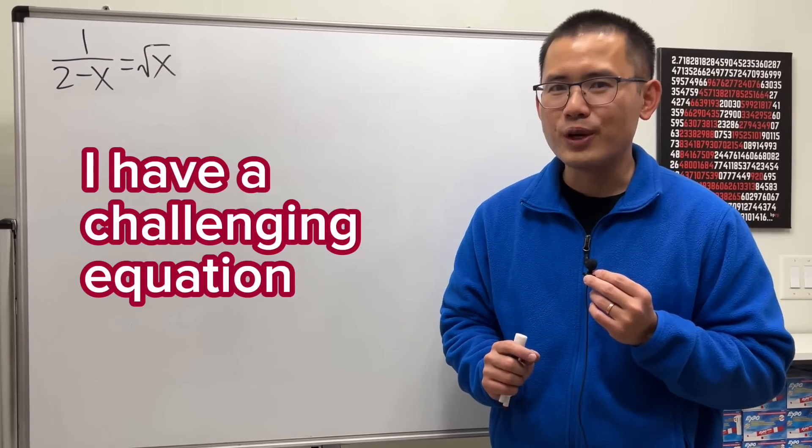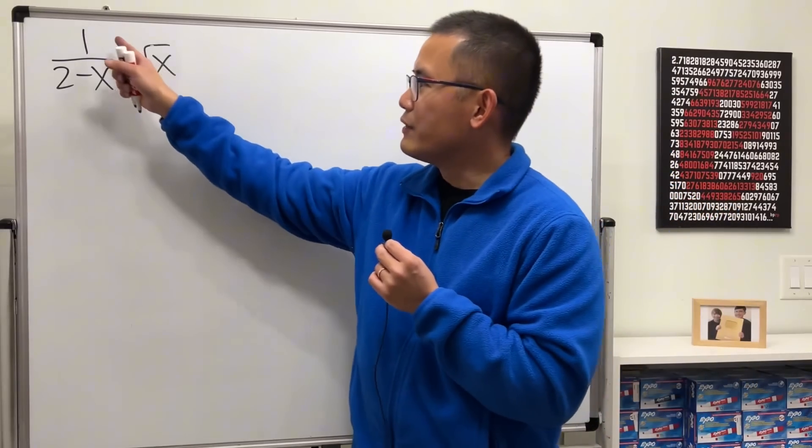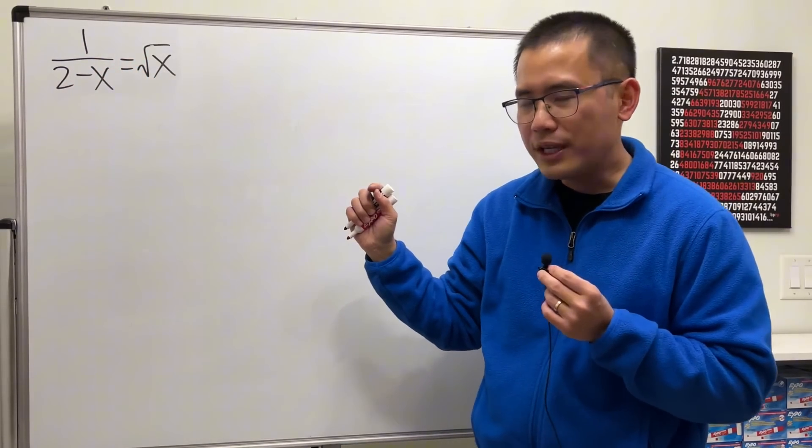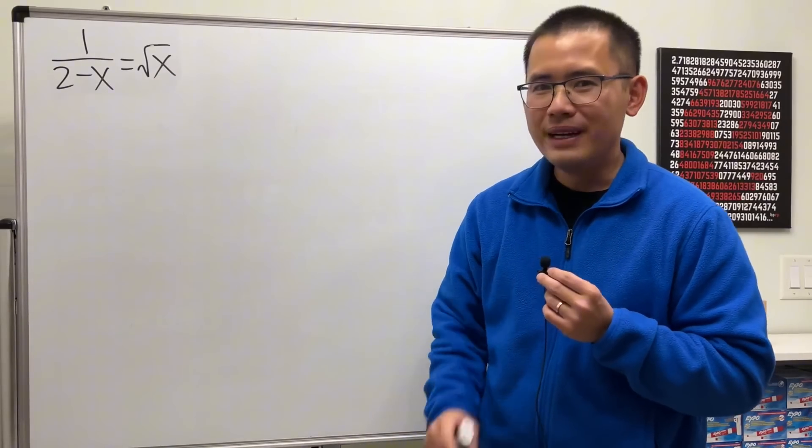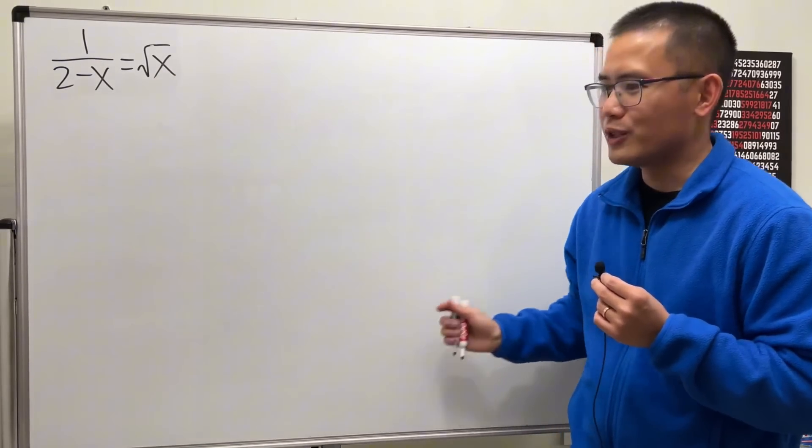Today, I have a challenging equation for all the pre-calculus students. On the left-hand side, we have a rational function, 1 over 2 minus x. And on the right-hand side, we have a radical function, square root of x. And you know the deal. Please pause the video and try it first before you watch this solution.